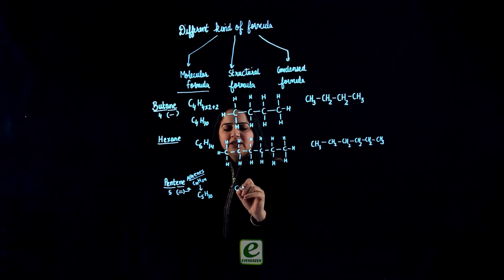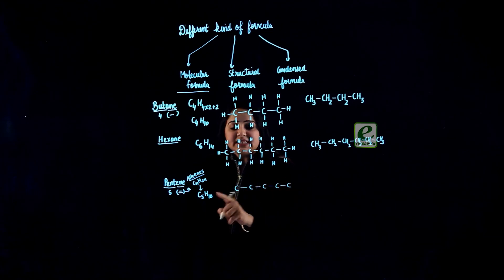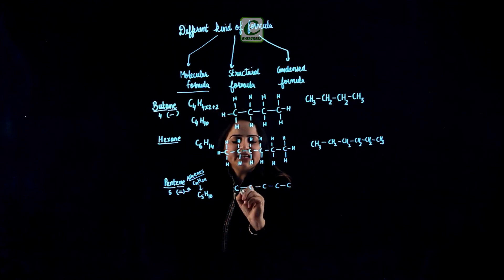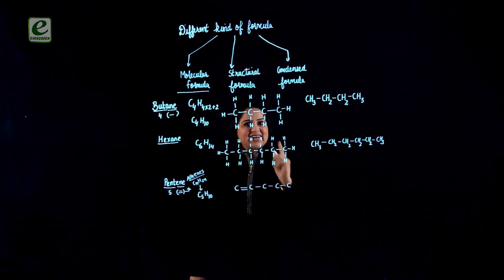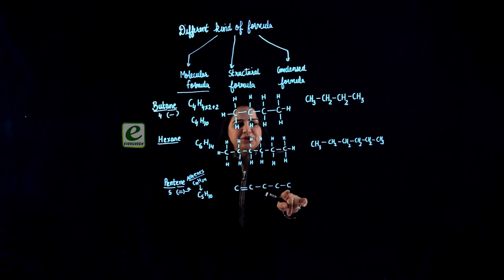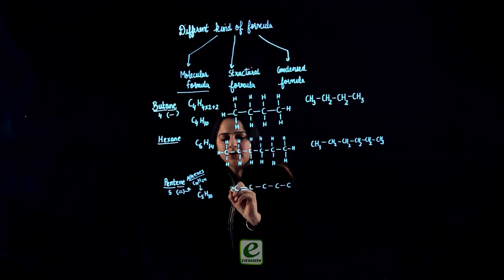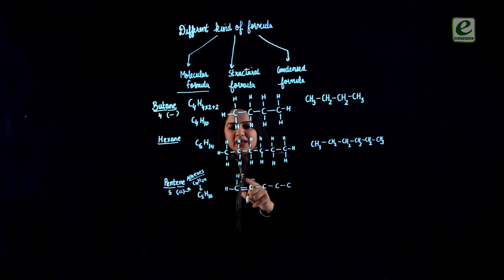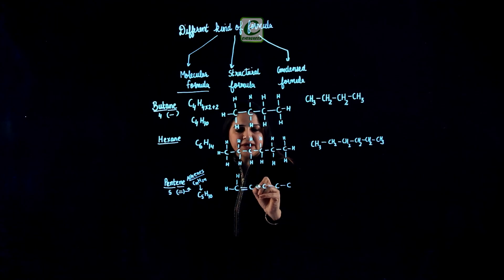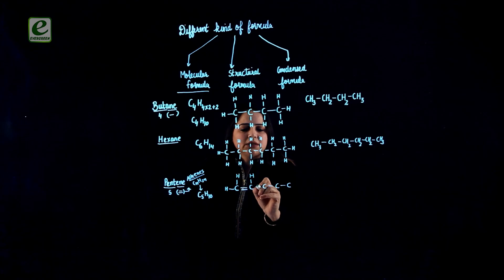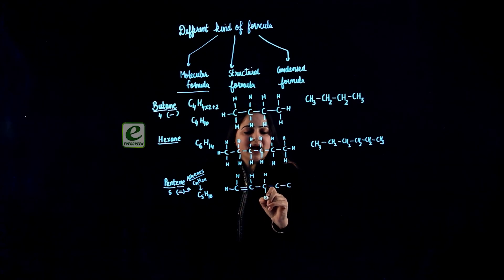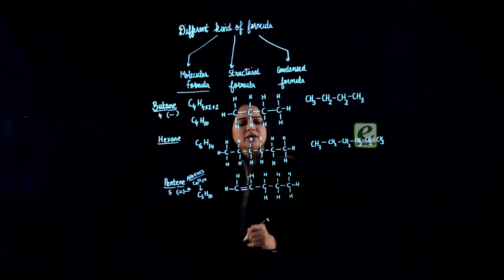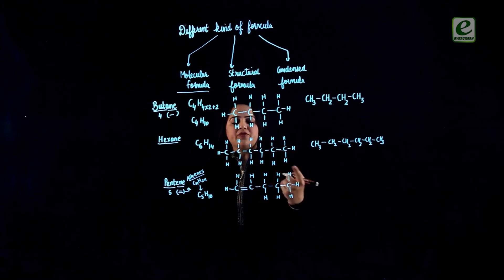When we write down the structure, the first step is to write down the carbons. Since we have 5 carbons, we write down 5 carbons, but it is an alkene with a double bond, so we need to put 1 double bond — only at 1 position. With the double bond at the first position, this carbon needs 2 more hydrogens. The next carbon, having 3 bonds already, needs only 1 more hydrogen. The following carbons each need 2 more hydrogens. The last carbon has 1 bond and needs 3 more hydrogens. So ultimately the structural formula takes this shape.